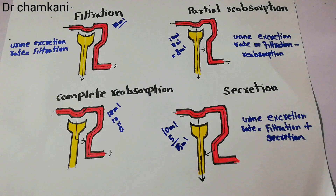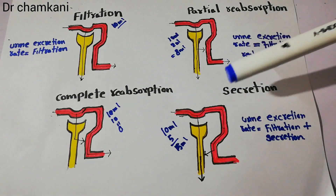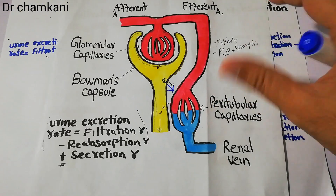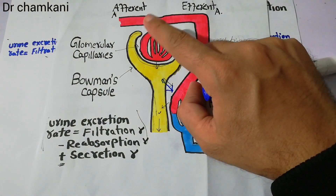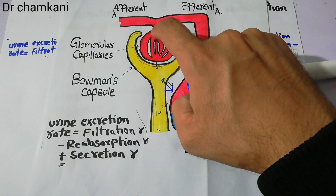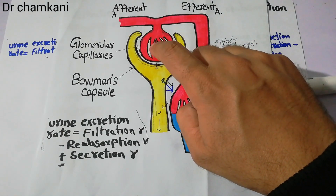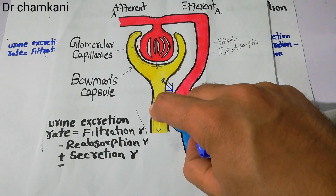To summarize, urine formation is a combination of filtration, reabsorption, and secretion processes. Looking at the nephron, every nephron has a Bowman's capsule containing the glomerulus, which is a bunch of capillaries. The afferent arteriole brings blood into the glomerulus and due to pressure, blood is filtered. The fluid comes out into the Bowman's capsule and then starts moving in the tubule.